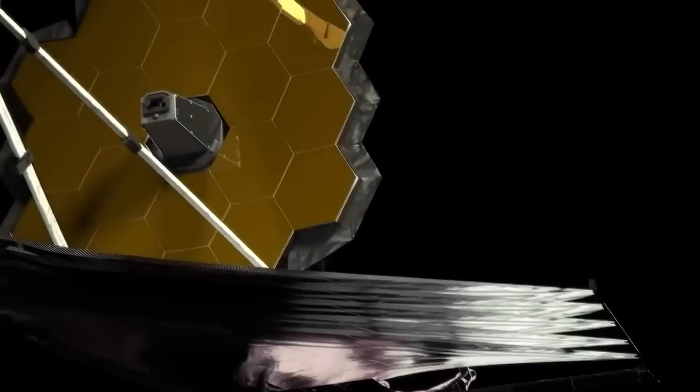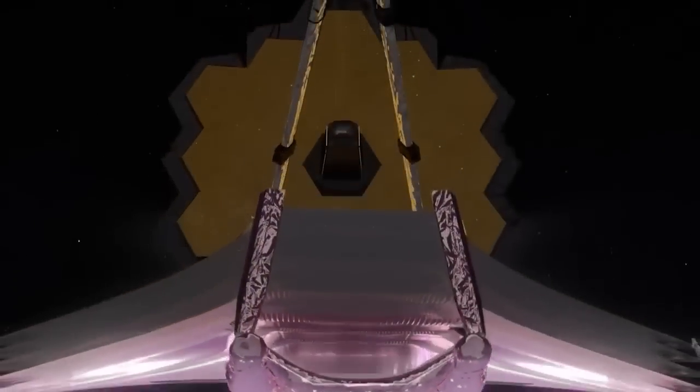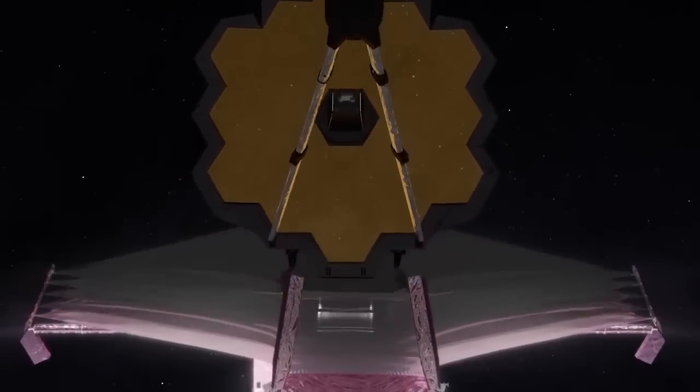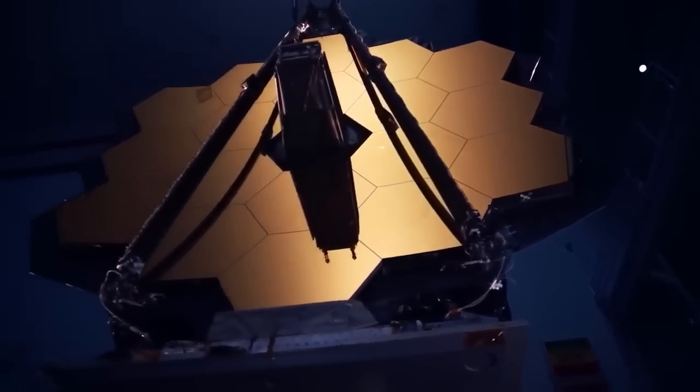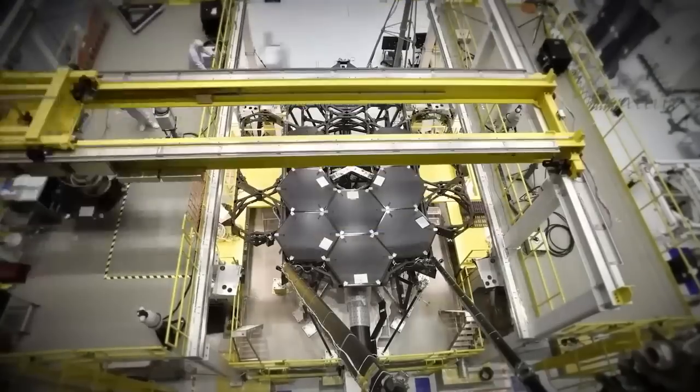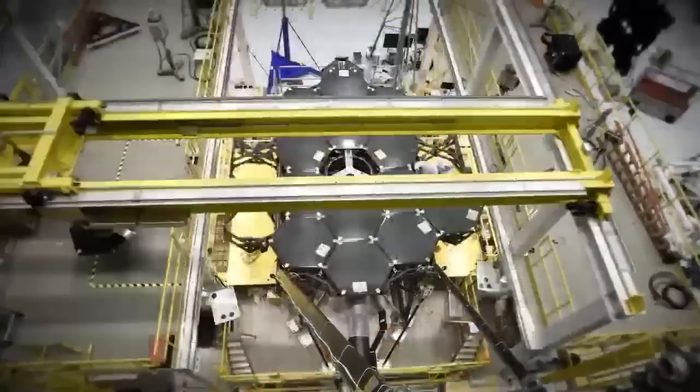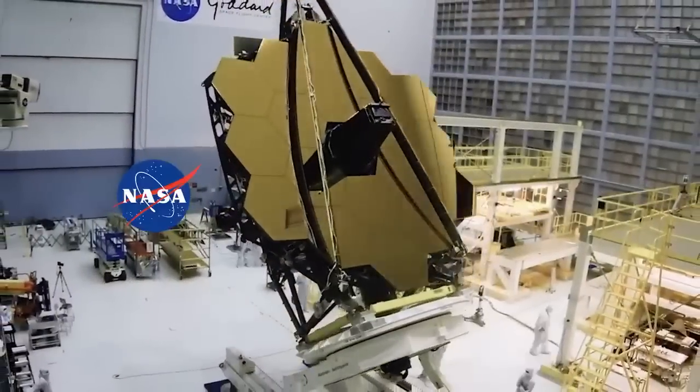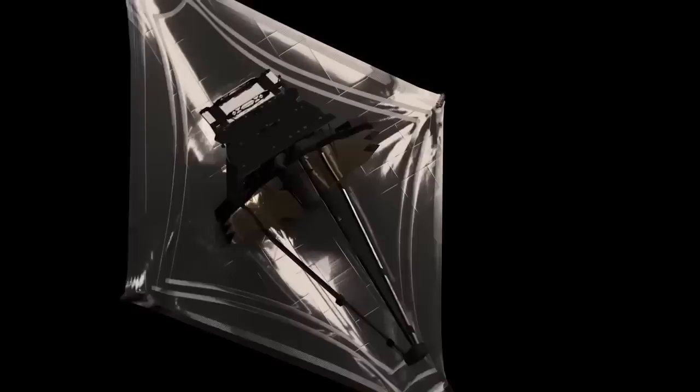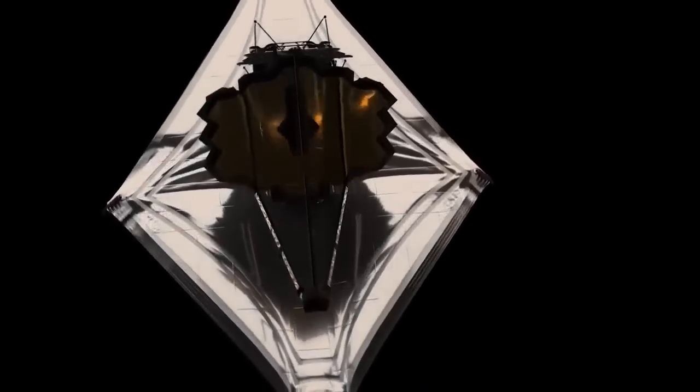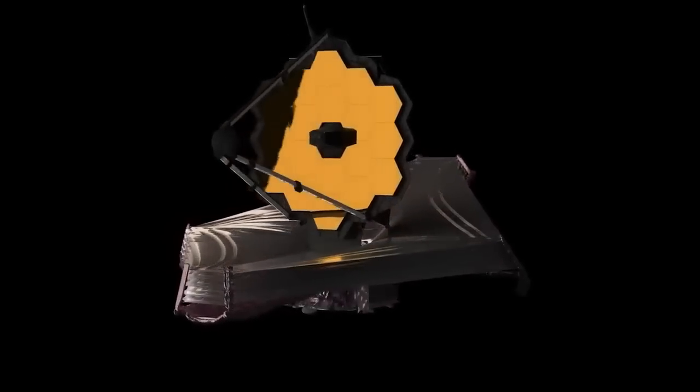Before we jump into the jaw-dropping findings, let's take a moment to appreciate this marvel of engineering and technology. The James Webb Space Telescope didn't just happen overnight. It's the result of years of intense research, mind-bending mathematics, and an international collaboration between NASA, the European Space Agency, and the Canadian Space Agency. The telescope is an intricate ballet of mirrors and sensors that function together in the cold emptiness of space to bring us the most detailed images of the universe that human eyes have ever seen.